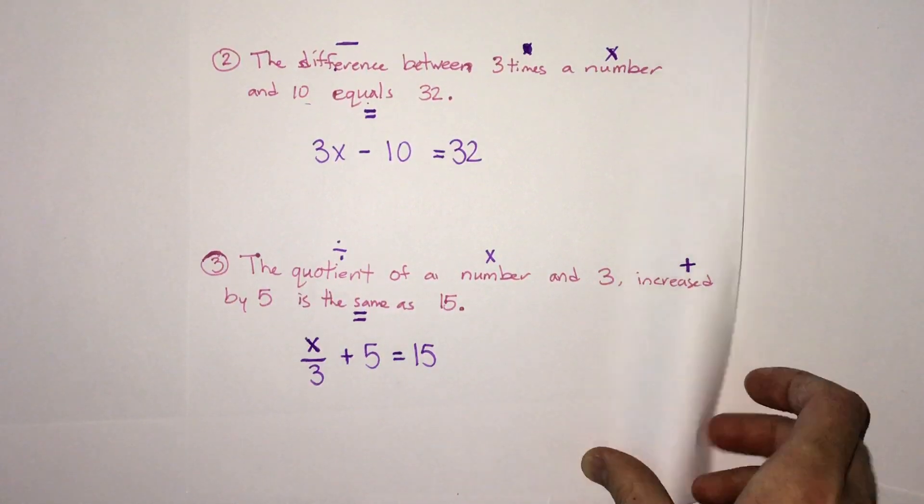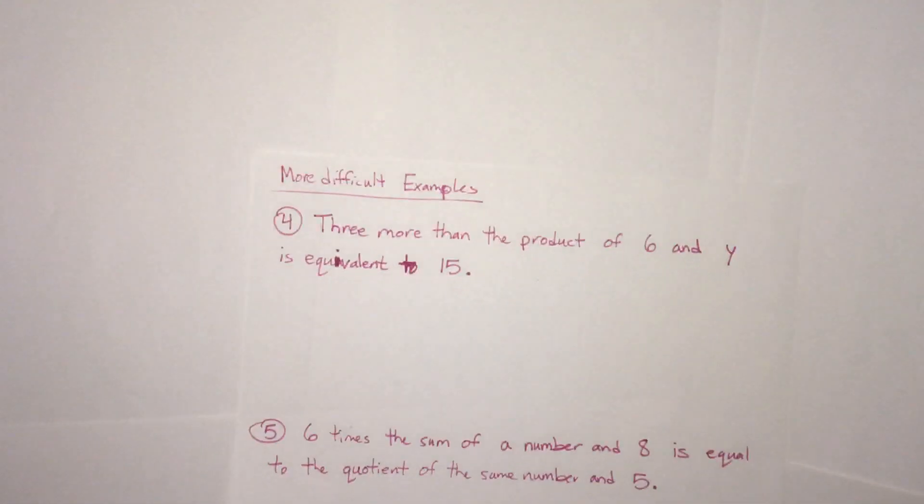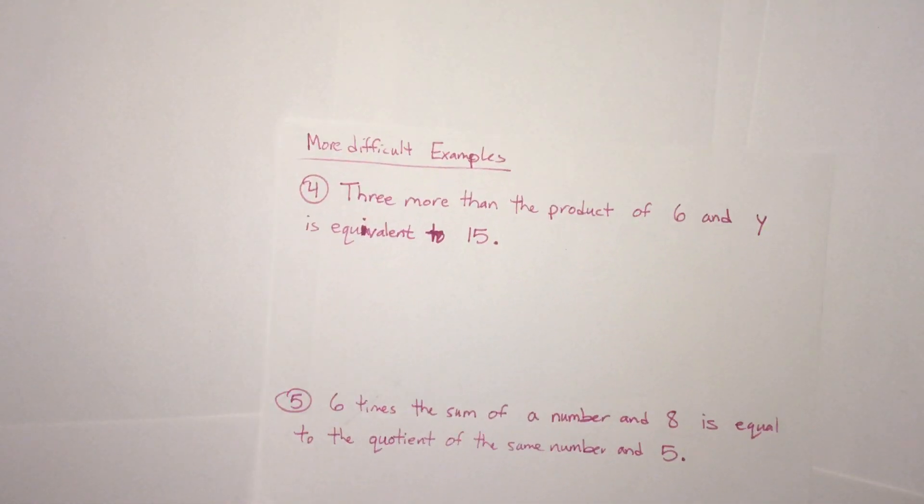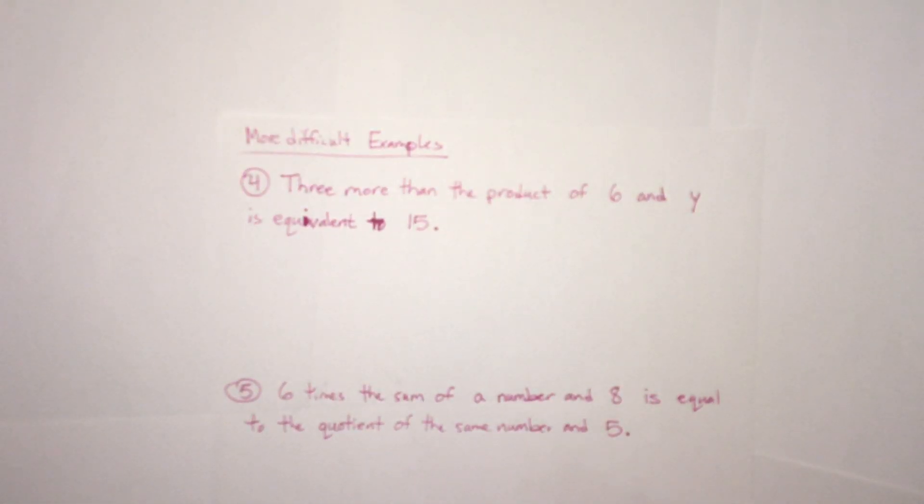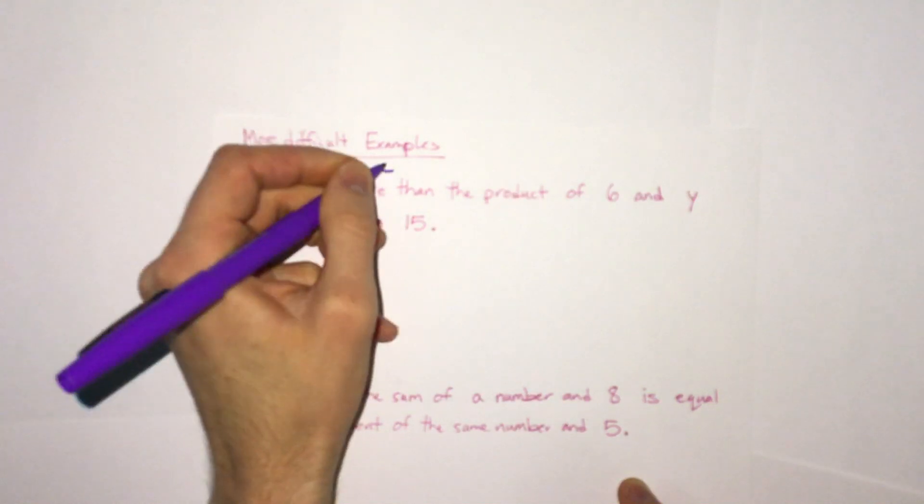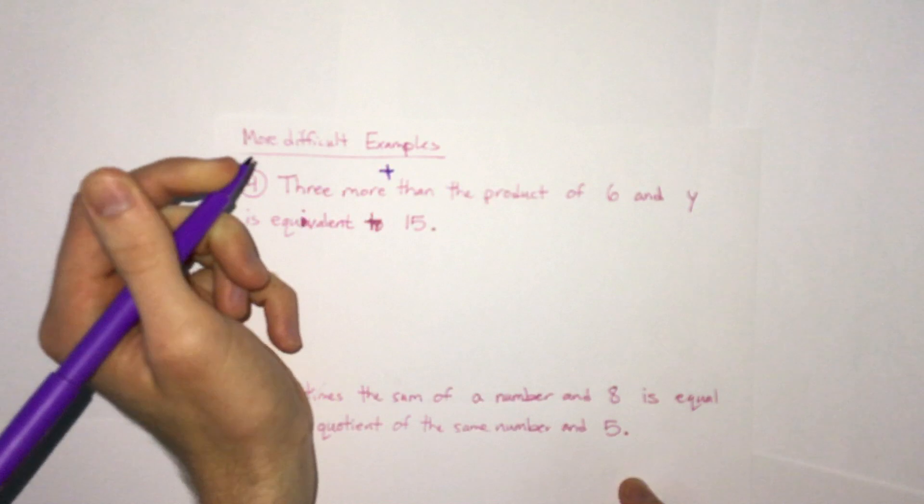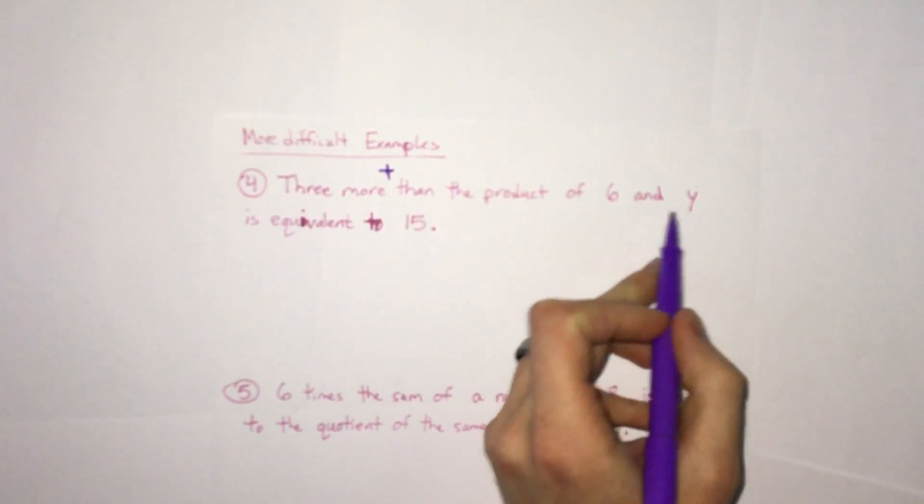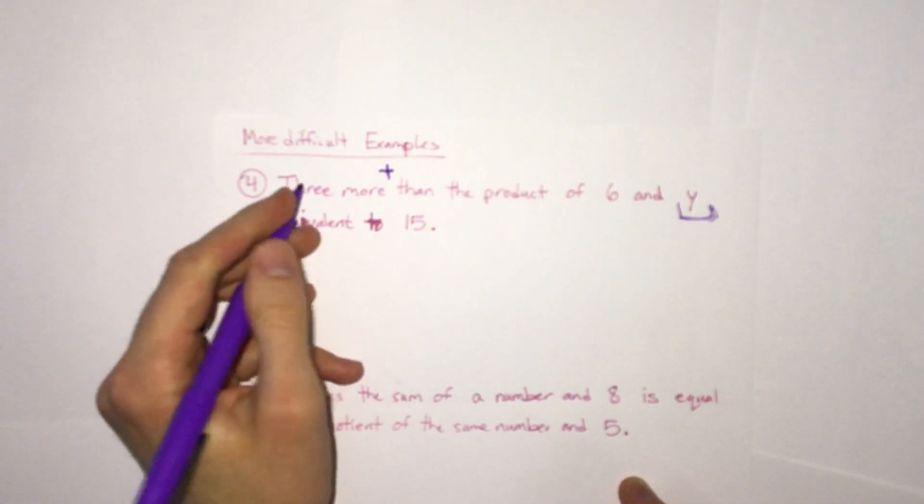Those are some simple examples where we have something basic on the left side equals a number. We're going to look at a few more complicated examples here that get a little more complex. This number four here says three more than the product of six and y is equivalent to 15. Well, we see three more than. So if we're talking about more than, then we're doing addition. And then it says the product of six and y. Here it doesn't say a number, but it tells us our variable.